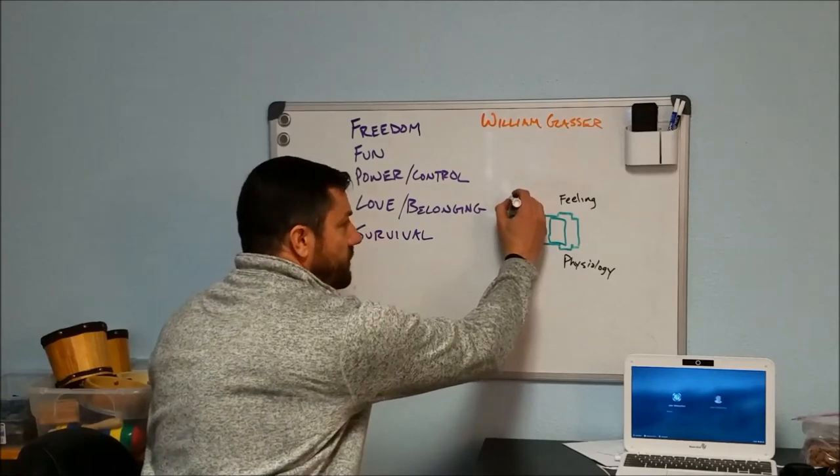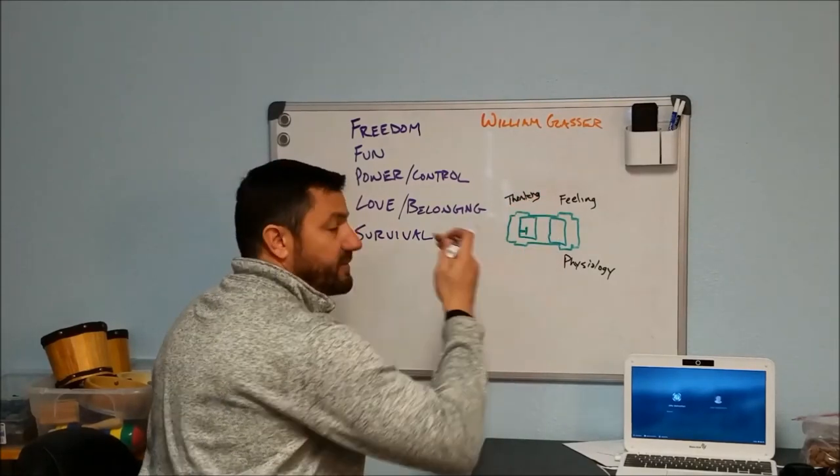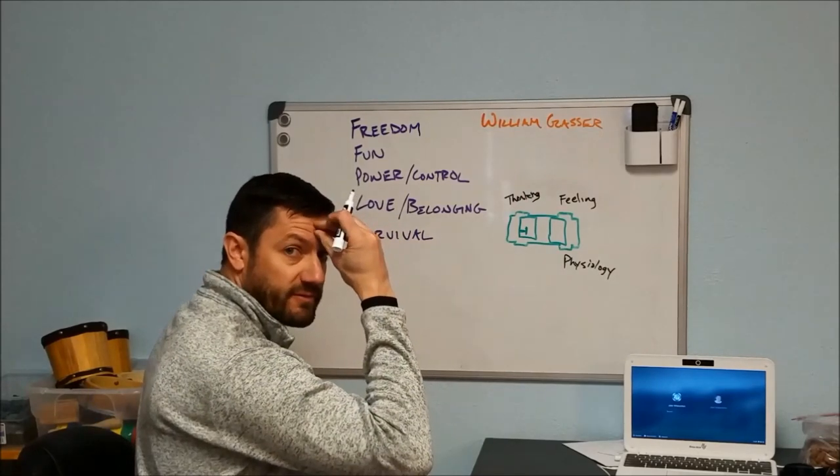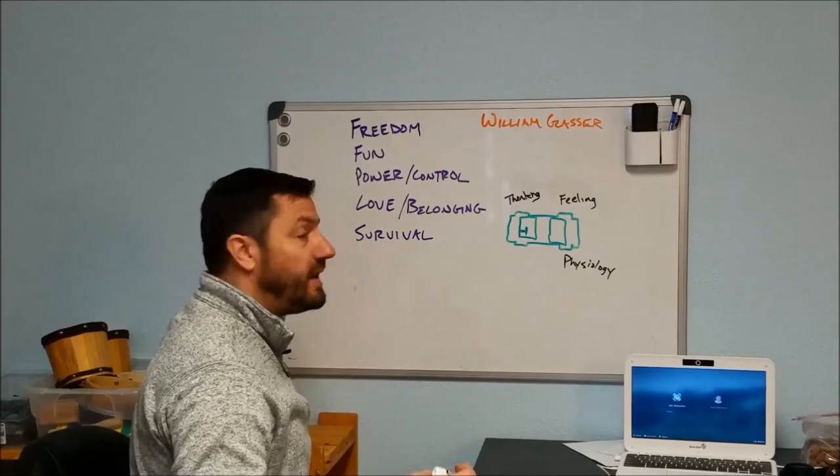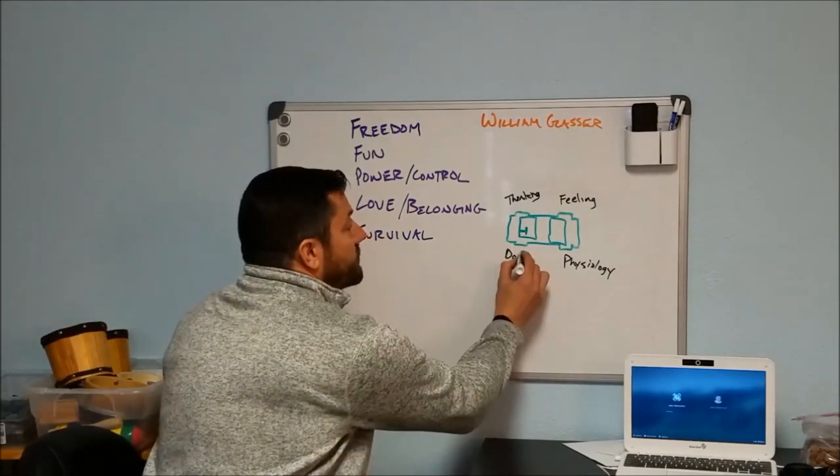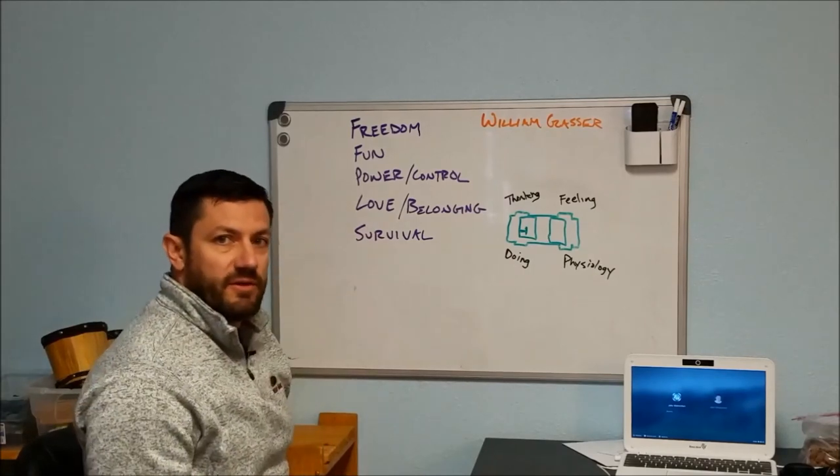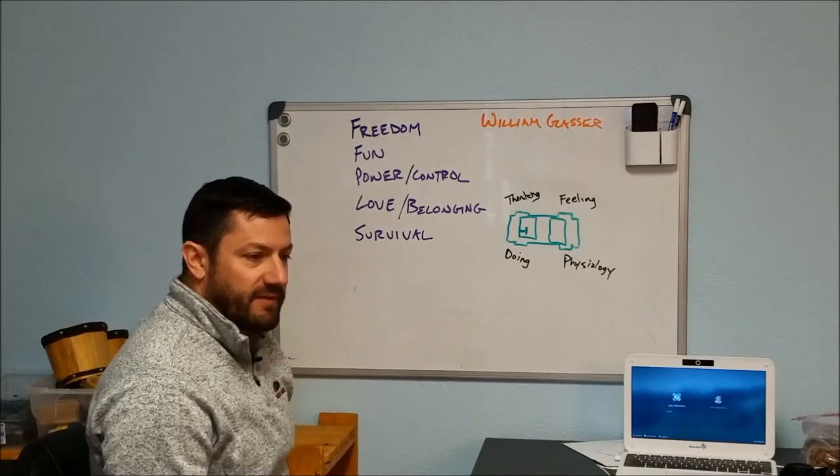But not necessarily whether or not you feel it. Up on the front tires that steer the car we have thinking, which we absolutely can do something about. This is the prefrontal cortex, the frontal lobe of our brain. We can absolutely control what we think, what we believe. And then doing, we absolutely have a choice over what it is that we do.